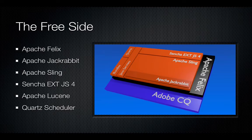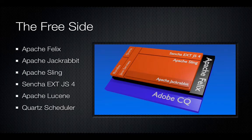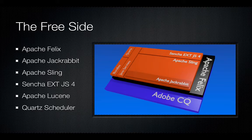The free side is really comprised of six core technologies — there are actually more, but these are the six that confuse everyone coming in. It's Apache Felix, which is essentially an OSGI framework. Apache Jackrabbit, which is a JCR implementation. Apache Sling, which is a RESTful web framework. ExtJS 4, which is a JavaScript application framework — not to be confused with a JavaScript framework; they're completely different. Apache Lucene, which is a very powerful search engine. And a Quartz Scheduler, which is basically a cron system that's programmatically accessible.